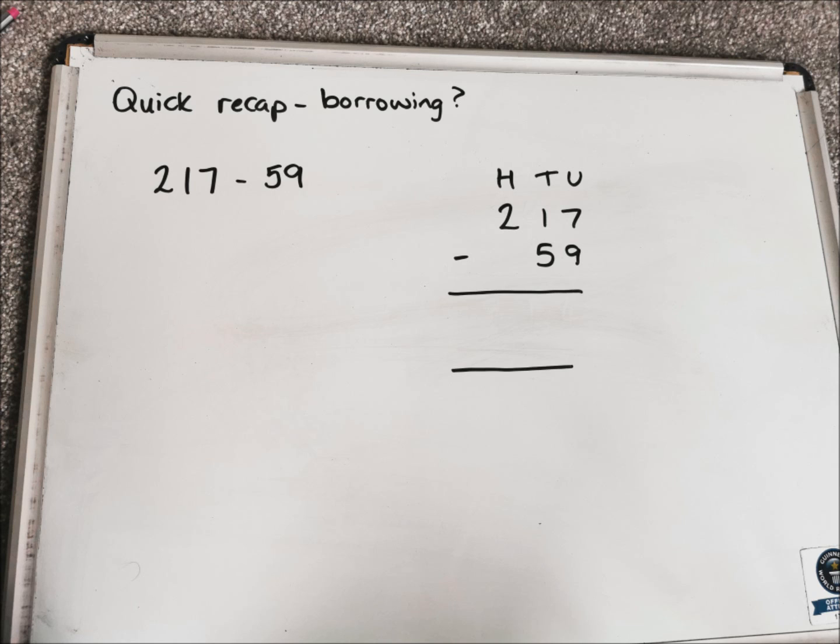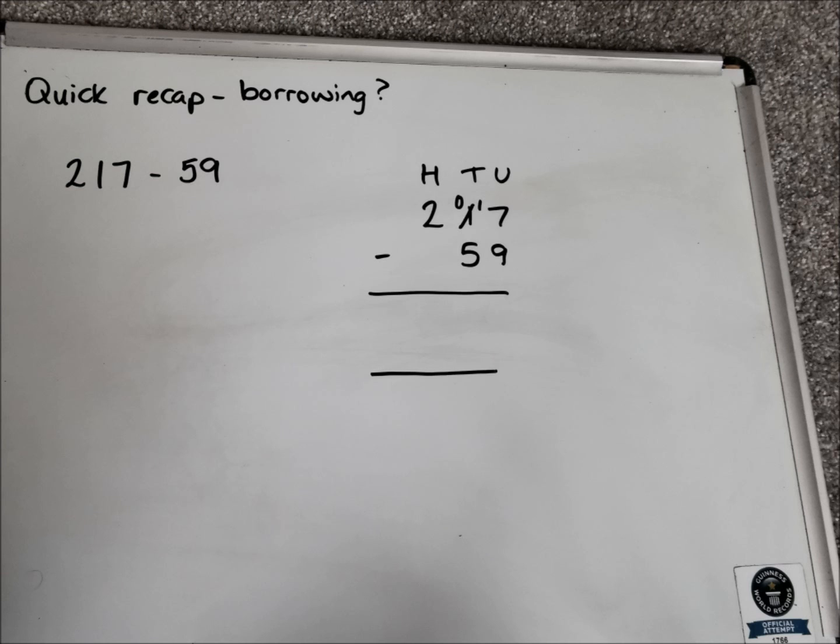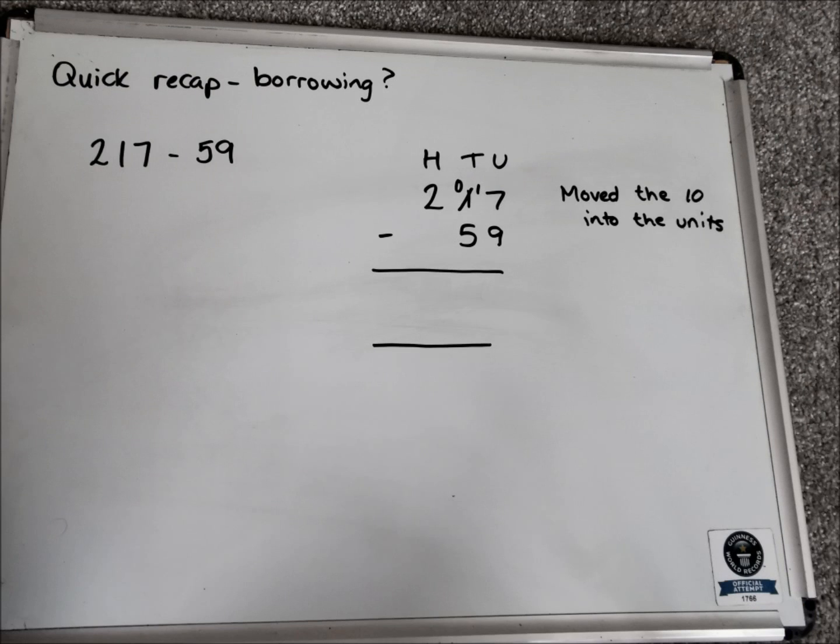So what we need to do is go to the tens column. The tens column only has one 10 in it. So we move it over into the units column, leaving nothing behind in the tens column. So we've now got 0 in the tens column and 17 in the units column.